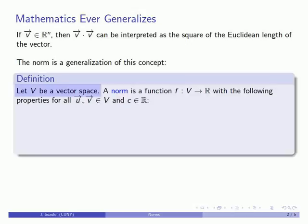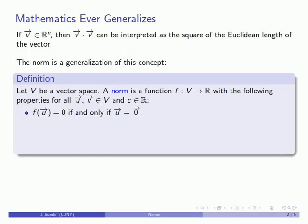Suppose I have some vector space. A norm is a function that goes from the vector space into the real numbers with the following properties, for all vectors in our vector space and all scalars in our real numbers. First, the norm is going to be a real number; the norm of a vector will be zero if and only if the vector itself is the zero vector. For all other vectors, the norm of the vector must be greater than zero. Next, we have our scalar multiple property: the norm of the scalar multiple of a vector is the absolute value of the scalar times the norm of the vector itself.